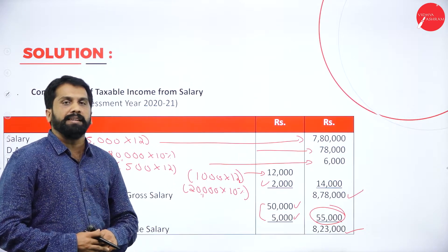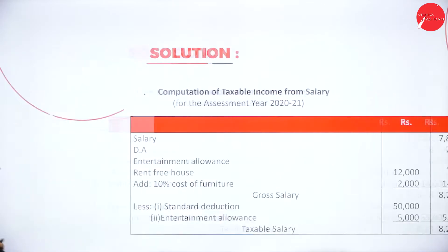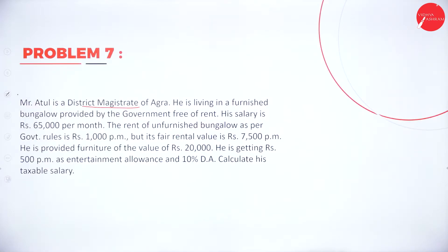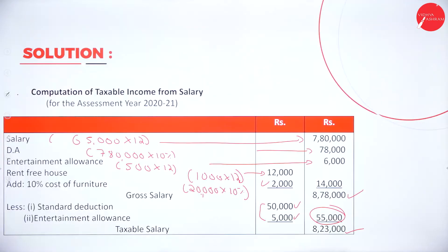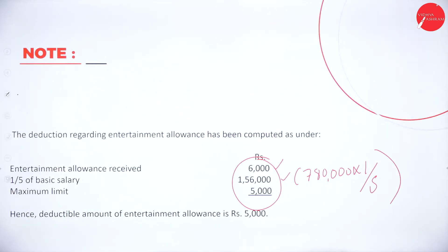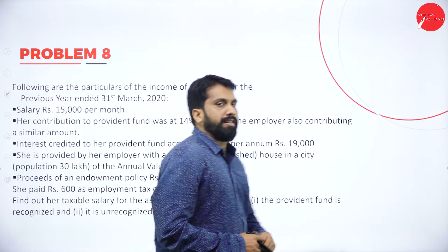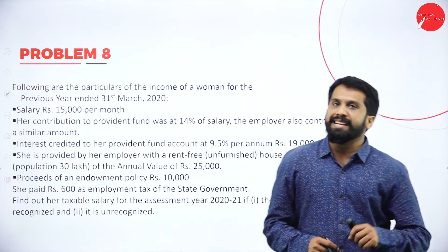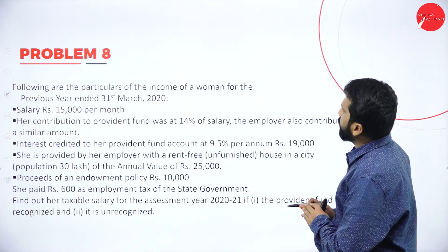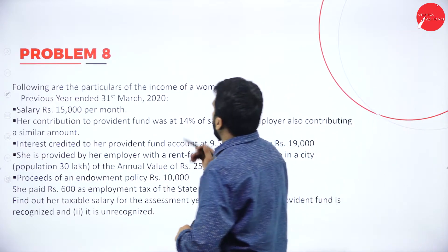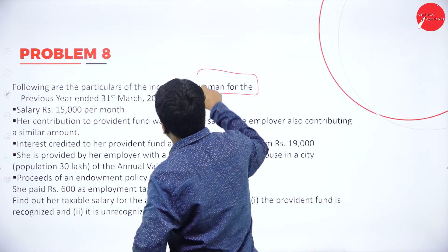This is all about Problem Number 7 — you can take a screenshot. The last problem for the day — the easiest one. Following are the particulars of income of a woman, previous year ending 31st March 2020.